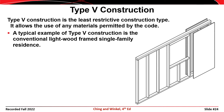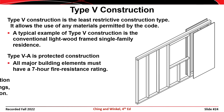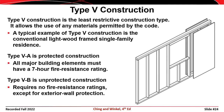Type 5 construction includes typical wood-framed structures and is the only construction category that permits exterior walls and main structural members to be constructed of combustible materials. Typical wood-framed homes would be considered Type 5 construction. The distinction between Type 5A and Type 5B is that major elements in Type 5A construction are required to have a one-hour fire rating.